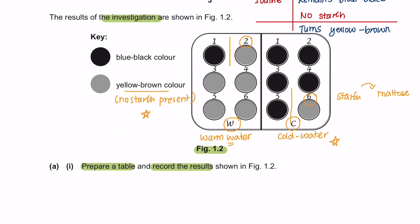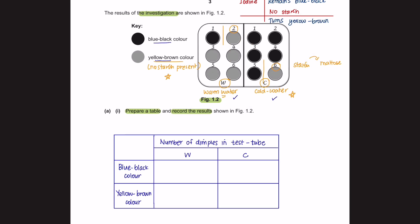So let's see the variables that we have here. We are going to compare between warm water and cold water. And then write down the number of dimples which shows blue-black color and yellow-brown color.